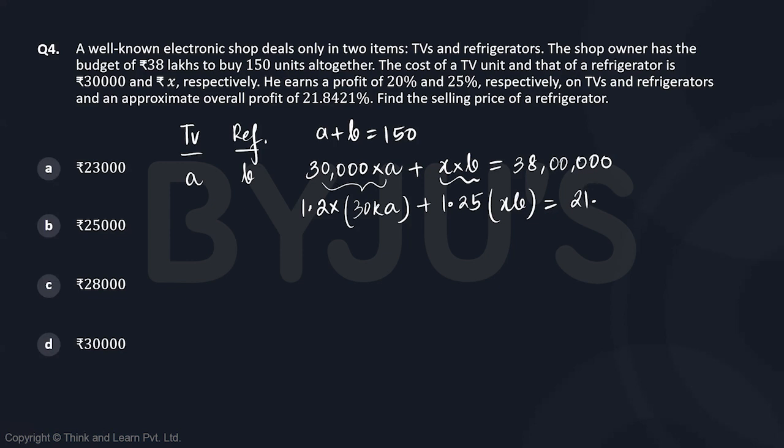Let's multiply by 0.20 and 0.25 so we can equate the profit. So 21.8421% of 38 lakhs, if you solve this, equals 8.3 lakhs, which is 830,000.